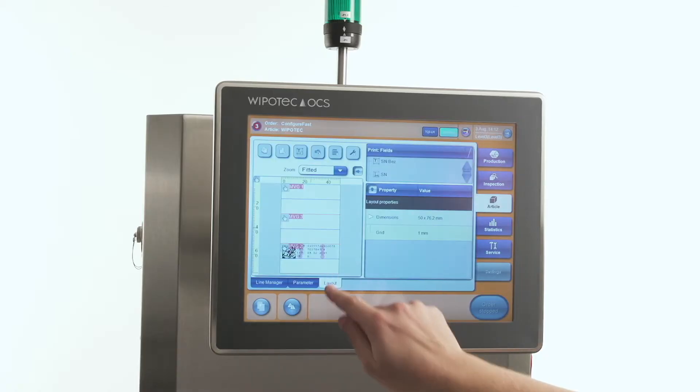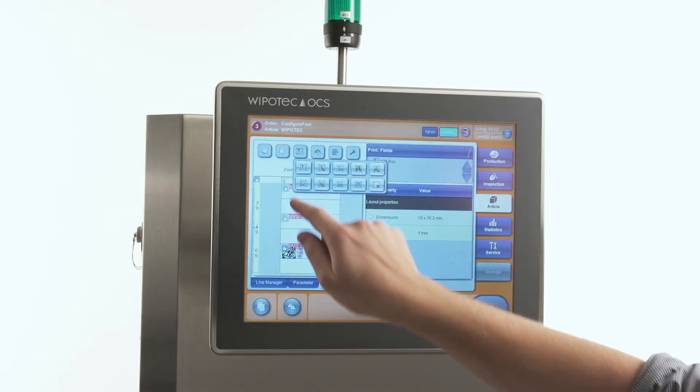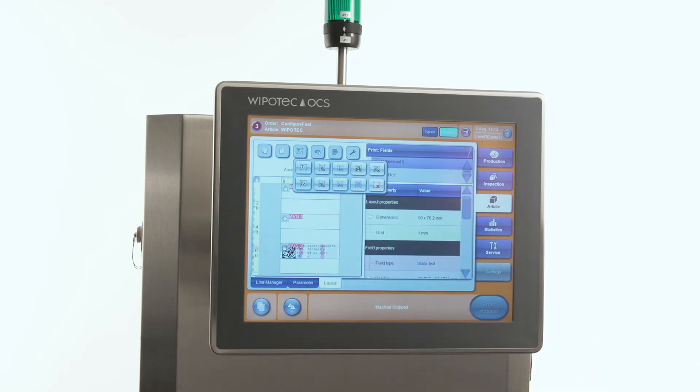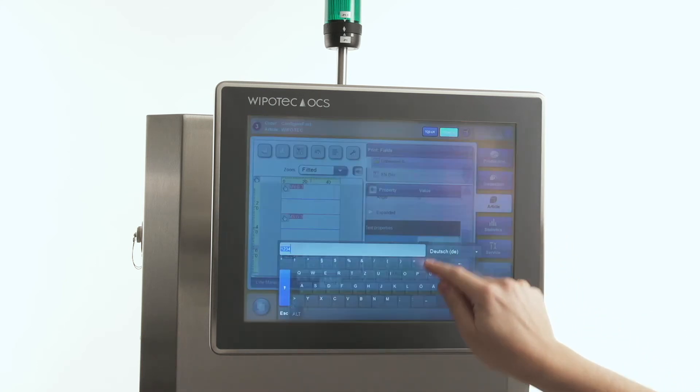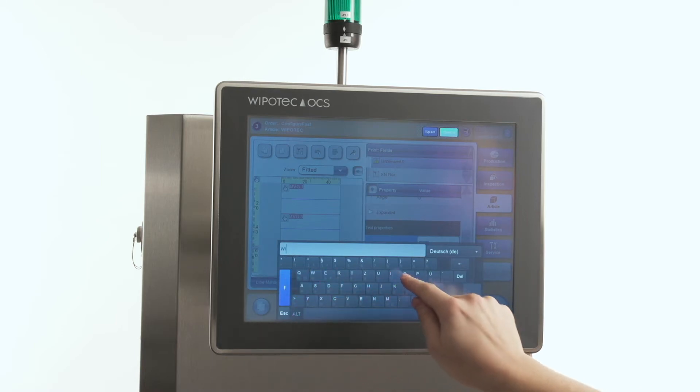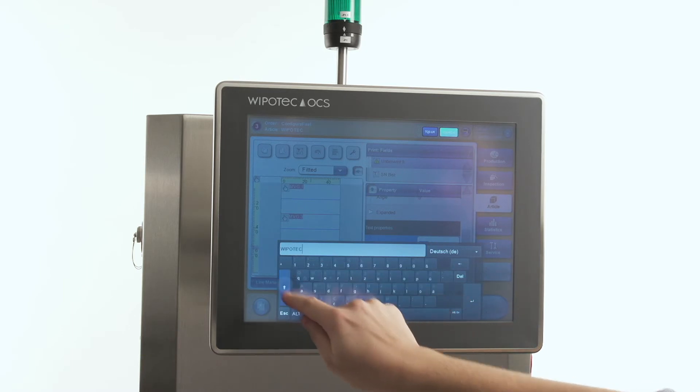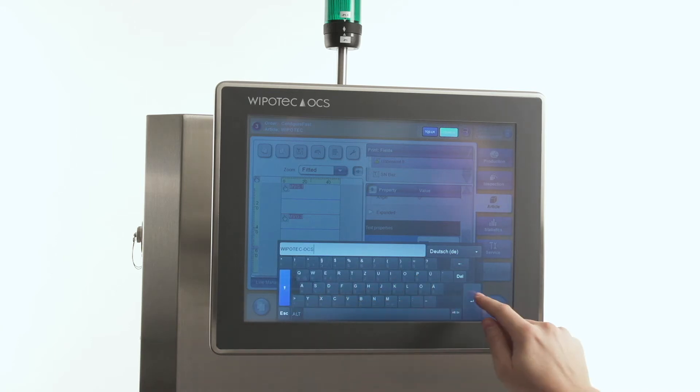Our TQS machines are all equipped with the ConfigureFast function located under the Article section on the HMI screen. ConfigureFast enables quick changeover of various products by adjusting text layouts using a single interface. This function is easily displayed on the screen for the operator to interactively and easily make changes by working with just one system.